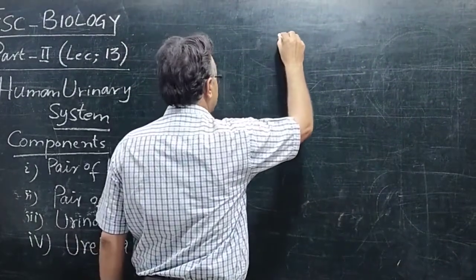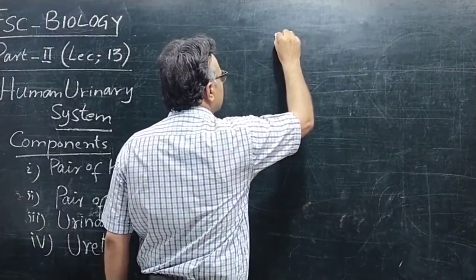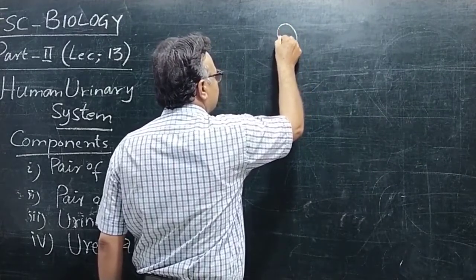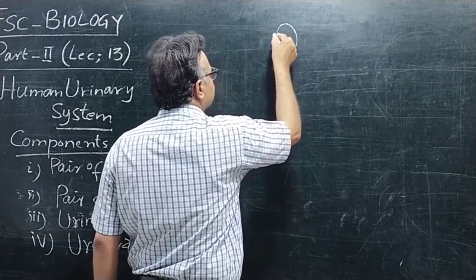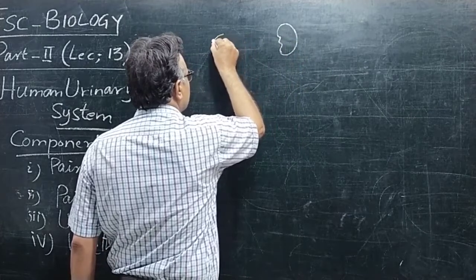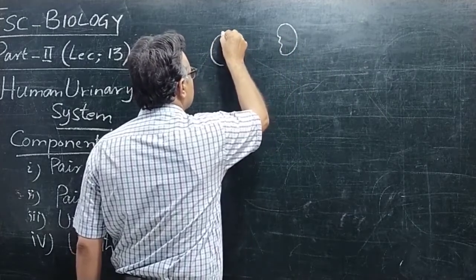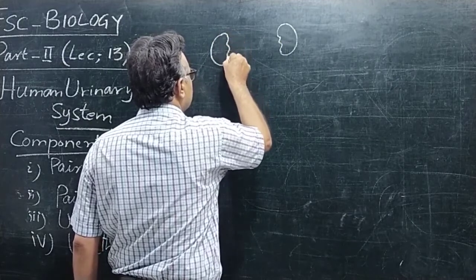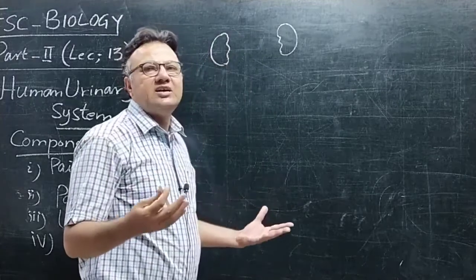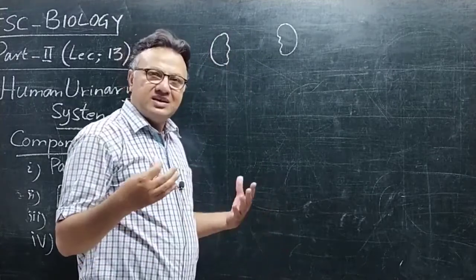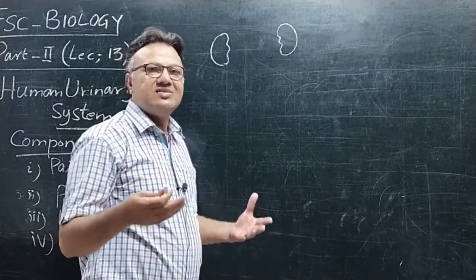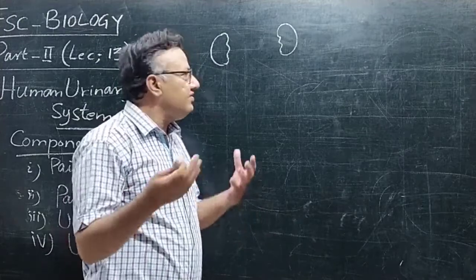سب سے پہلے ہم یہاں پہ kidneys کو دیکھتے ہیں۔ Pair of kidneys — یہ kidneys کا ایک pair آپ کو نظر آرہا ہے۔ They are supplied with renal arteries, different nerves, and renal veins are leaving these kidneys.